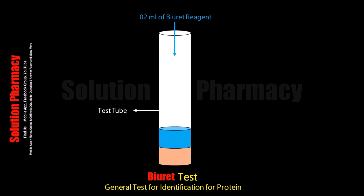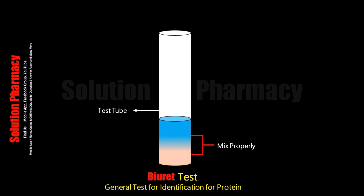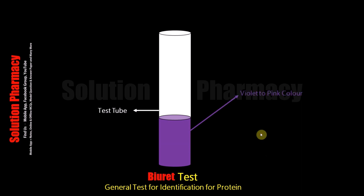Barrett reagent is made up of copper sulphate, sodium hydroxide, and sodium potassium tartarate. After adding 2 ml of the Barrett reagent to the test solution, mix the contents. And if we observe violet to purple color or rosy pink color, it means protein is present in the given sample. Here you can see violet color in the test tube due to the presence of protein in the sample.